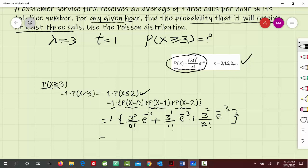Next, we compute this. This equals 1 minus (3^0 is 1, 1 divided by 0! is 1, so 1 times e^-3 is e^-3, plus 3^1 is 3, 3 divided by 1! is 3, times e^-3, plus 9 divided by 2! is 9/2, times e^-3).